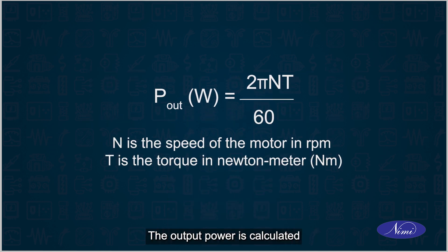The output power is calculated using this equation. P out in watts is equal to 2 pi NT divided by 60. Here N is the speed of the motor in RPM and T is the torque in newton meter.